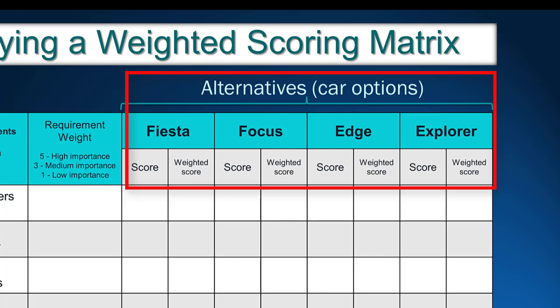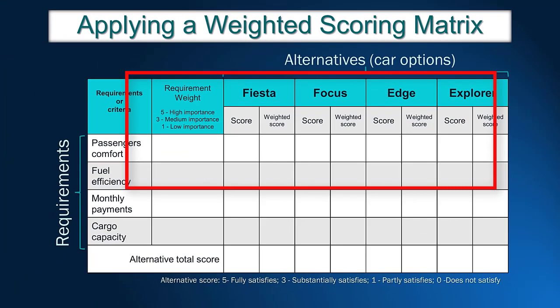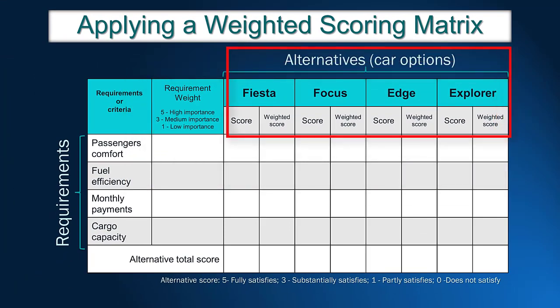Fiesta is the smallest, cheapest, and most fuel efficient car. On the other side, we included the Ford Explorer, a large utility vehicle. In the middle range, we have Ford Focus and Edge. Now the weighting and scoring table is ready for the analysis.